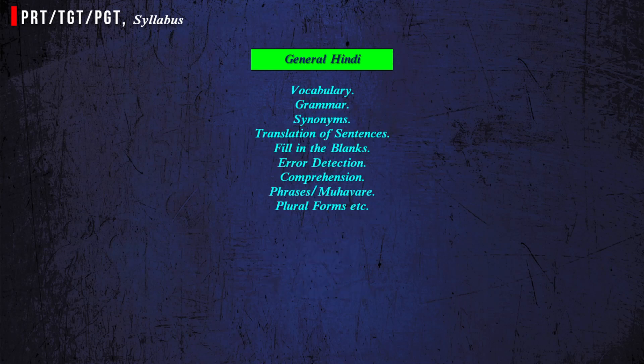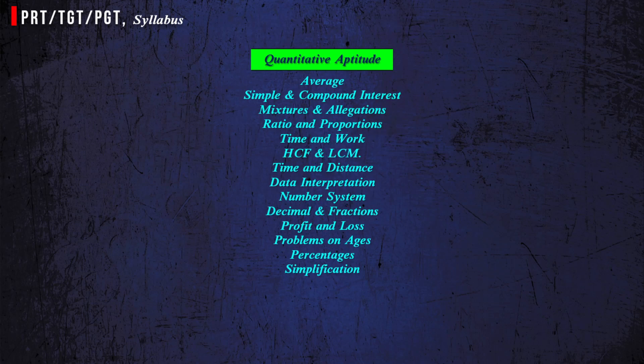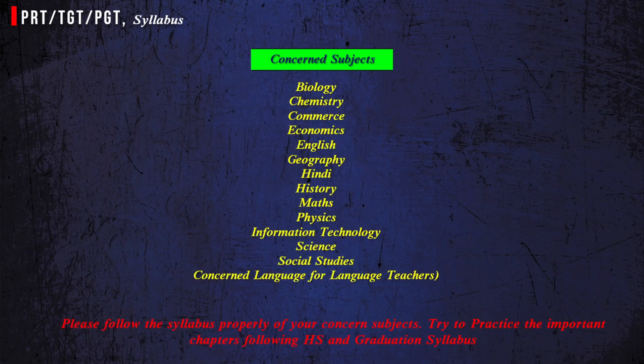In General Hindi, you have to read: Vocabulary, Grammar, Synonyms, Translation of Sentences, Fill in the Blanks, Error Detection, Comprehension, Phrases, Muhavare, Plural Forms, etc. In Quantitative Aptitude, you have to read: Average, Simple and Compound Interest, Mixture and Allegation, Ratio and Proportions, Time and Work, HCF and LCM, Time and Distance, Data Interpretation, Number System, Decimal and Fractions, Profit and Loss, Problems on Ages, Percentages, and Simplification.